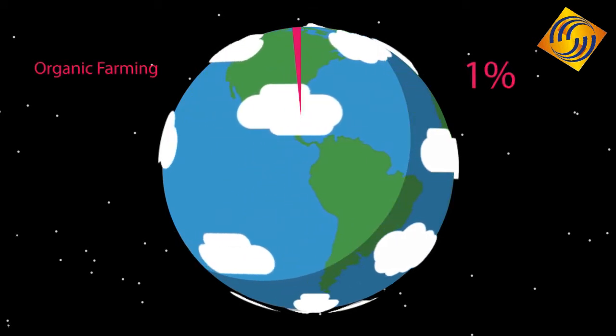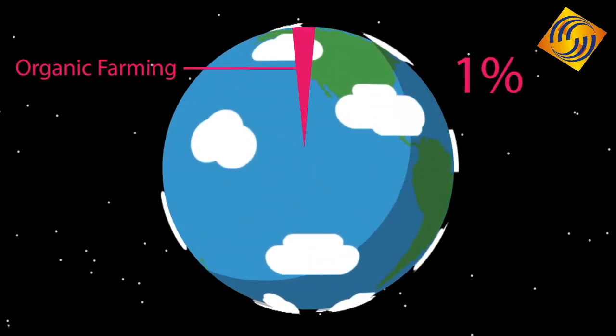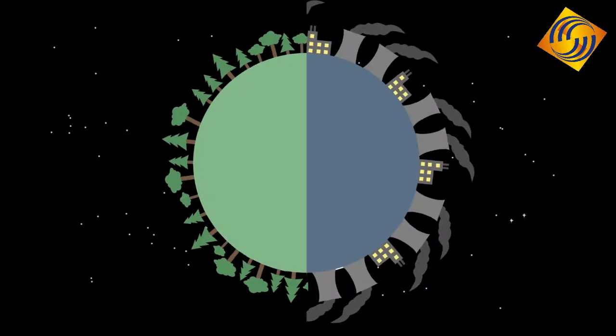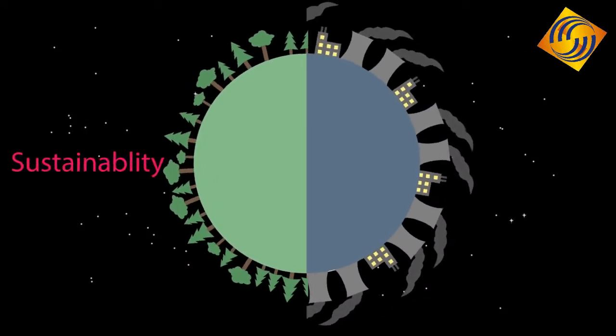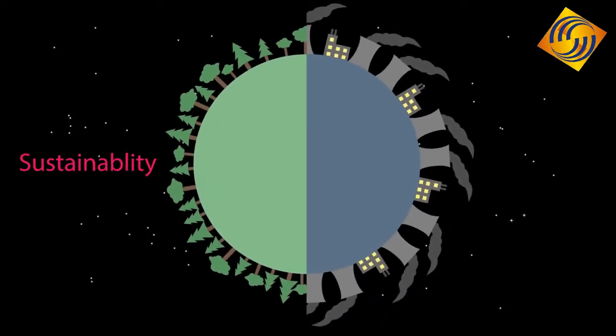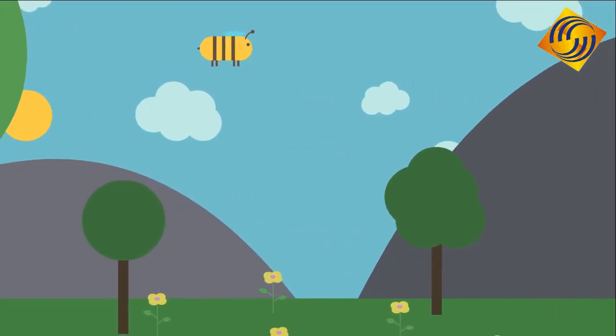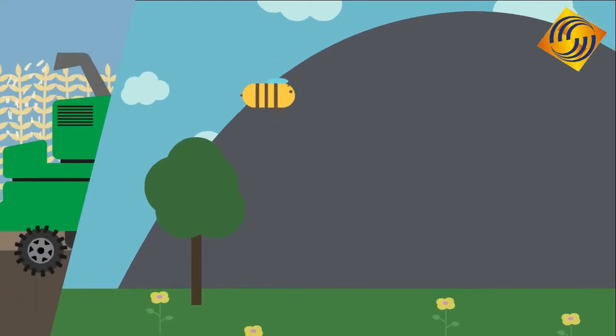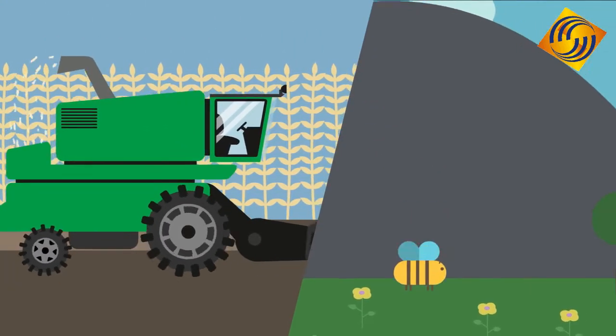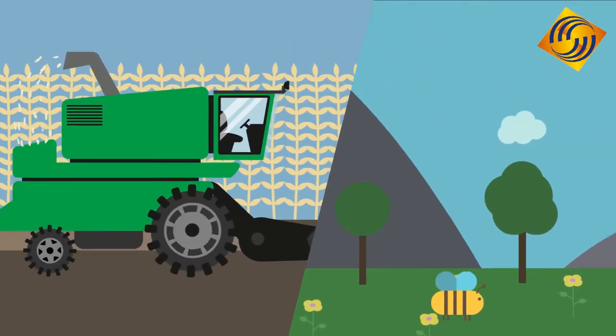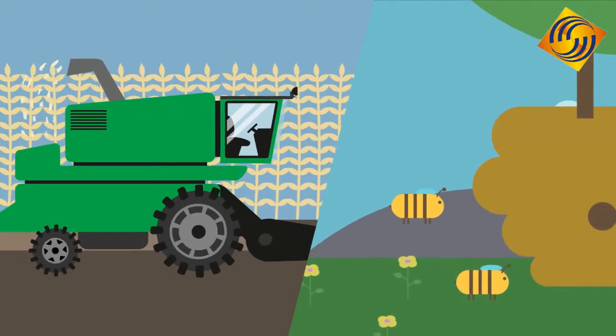Organic farming currently accounts for about 1% of agricultural land worldwide. It focuses on sustainability and is thought to have less detrimental effects on the environment than conventional farming. This has led to it being proposed as an alternative to conventional agriculture for helping to overcome the climate change crisis we are currently experiencing. But the debate continues as it is not a perfect solution.